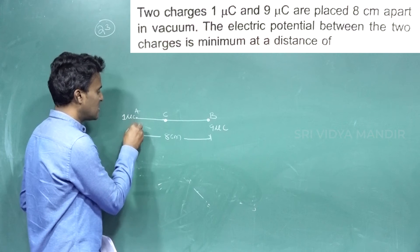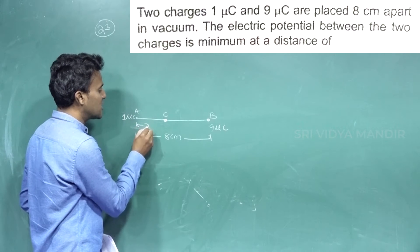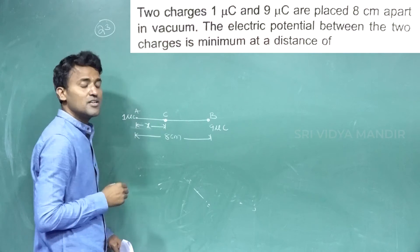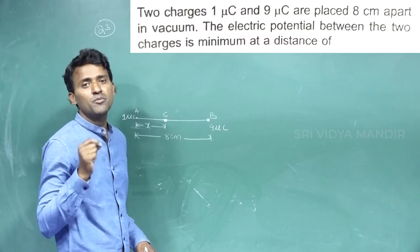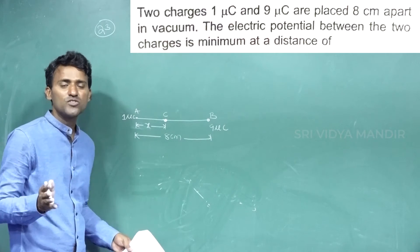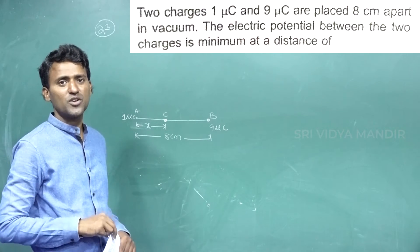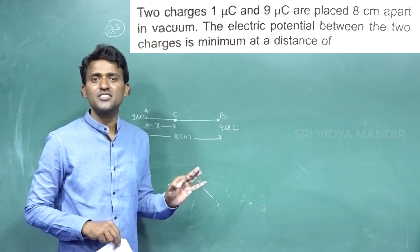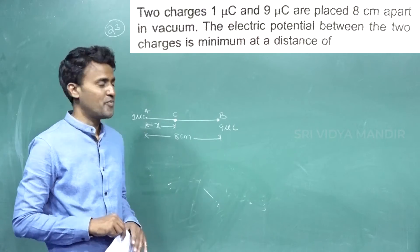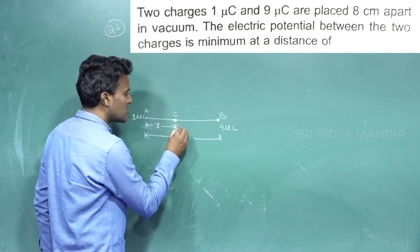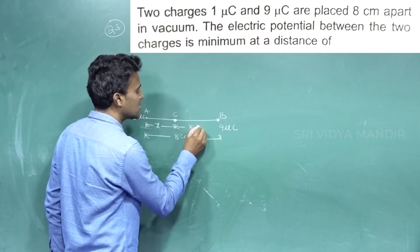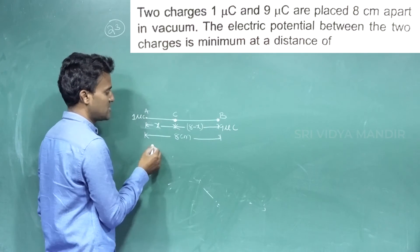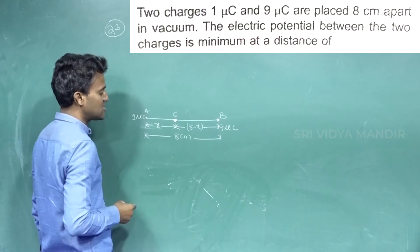We assume the resultant potential is minimum at a distance X from Q1. Since we don't know the distance, we assume it is X. The remaining distance from that point to Q2 is 8 minus X, since the two charges are separated by 8 centimetres.